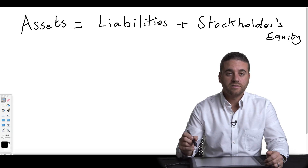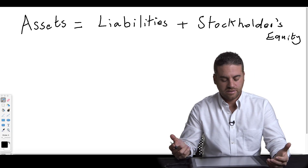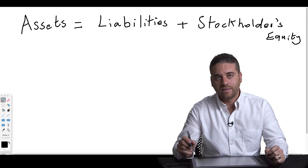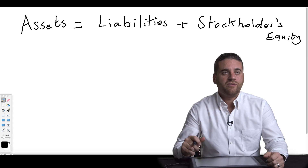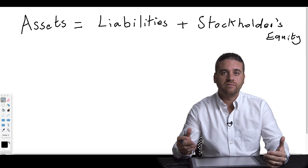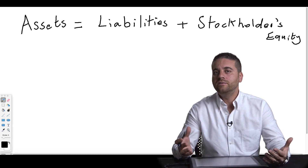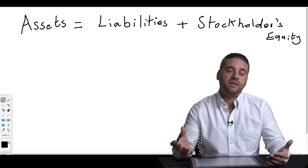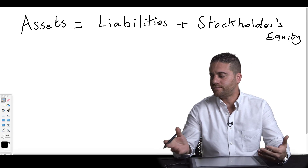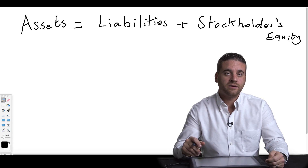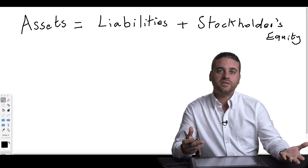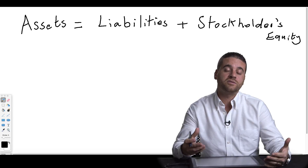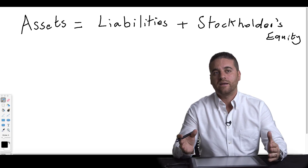Let me explain what each one of those means before we start recording transactions. Assets means any company belonging that has a value. If a company has cash in the bank, that's an asset. If they have a building, a piece of land, or equipment — anything they own that has value — it's considered an asset. It has to be owned by the company and must have some value.